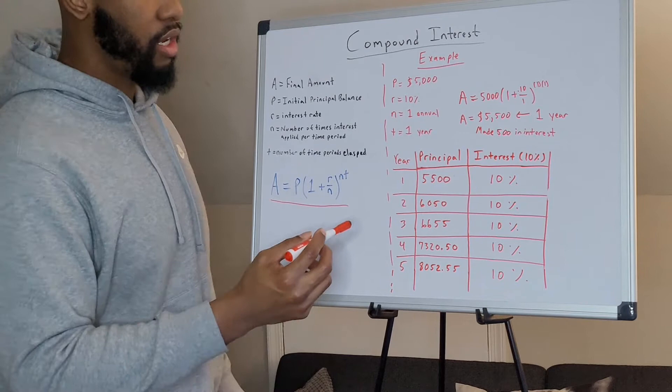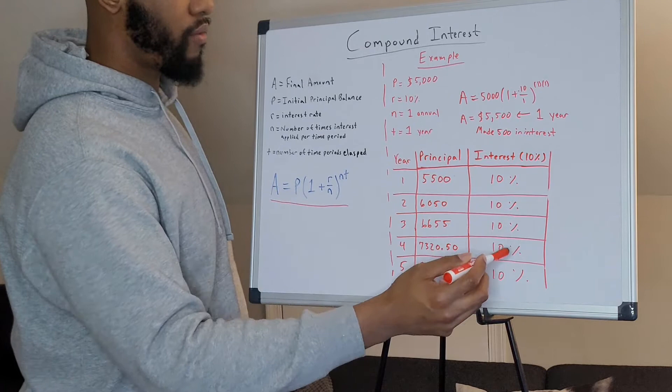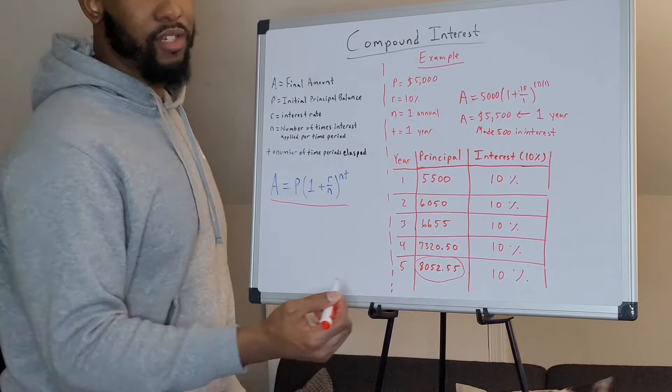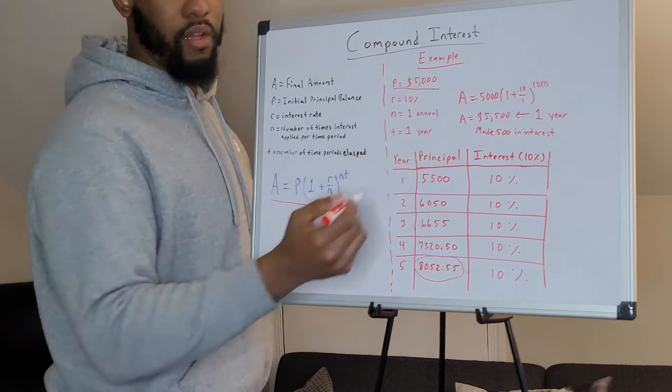As you can see, you made $50 more than you did the previous year. And as you continuously compound that interest back into the principal from year after year, by the time you get to year five, you made $3,000 more than what you initially invested.